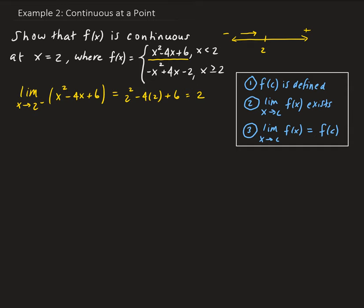Now we need to look at the right-hand limit. As x is approaching 2 from the right side, that means x is bigger than 2, so we want to use this function. The limit as x approaches 2 from the right side of minus x squared plus 4x minus 2. Doing a direct substitution, we get minus 2 squared — with the negative outside — plus 4 times 2 minus 2.